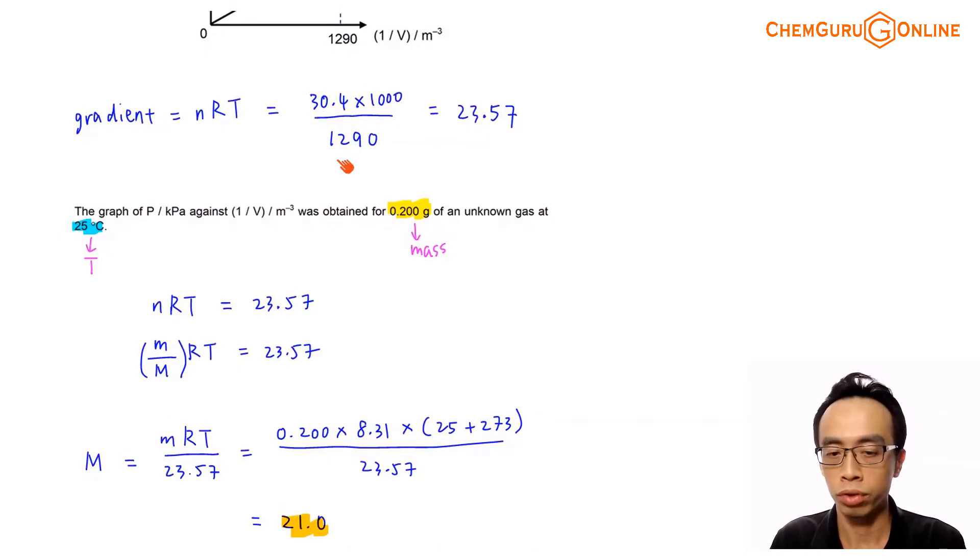So what we can do next is we can try to figure out what is my relative molecular mass. Now we have more information given in the question. The mass for this gas is 0.200 gram and the temperature is 25 degrees C and we have to convert it to Kelvin because the temperature has to be in Kelvin. So nRT equals to the gradient 23.57. Remember number of mole is just mass in gram over molar mass or the relative molecular mass, which is the unknown term that we want to determine here. And therefore I can write out this expression in terms of the molar mass or relative molecular mass. So my capital M, which is my relative molecular mass, I just bring this molar mass term over to one side and bring 23.57 over to the left-hand side.